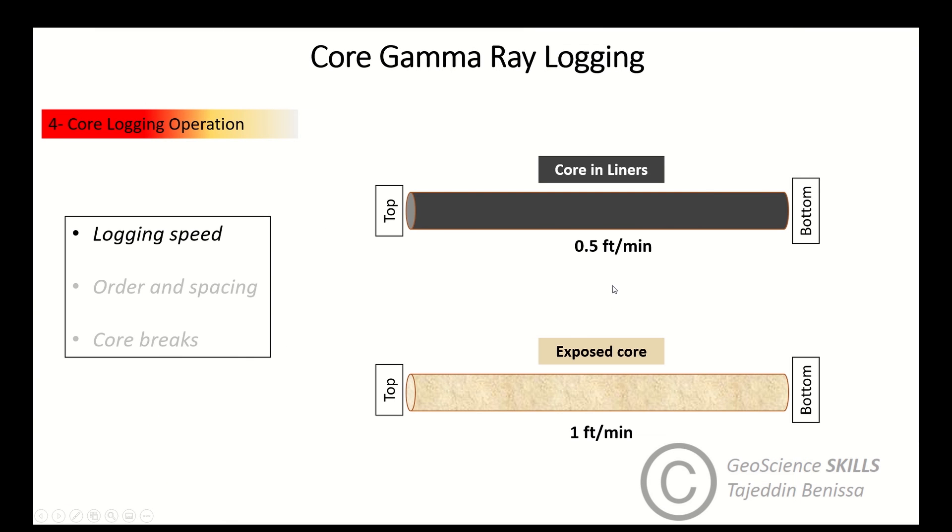Step number four is core logging operation. You can discuss with the technician the logging operation conducted if it fits your company requirements in terms of logging speed, core order and spacing, and core breaks. For logging speed, typical scan speed is around 0.5 feet per minute for cores inside the liners or tubes, while for exposed core typical scan speed is one foot per minute.